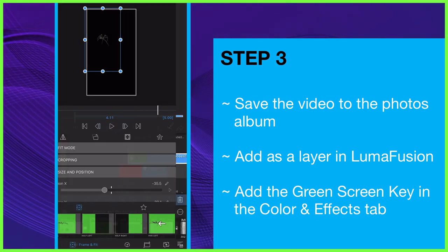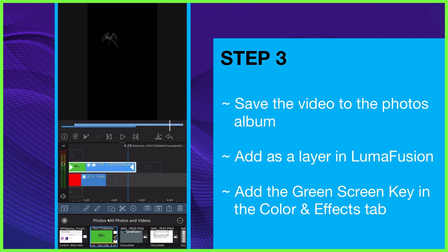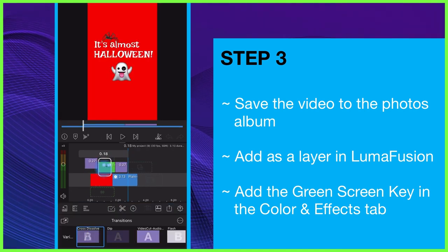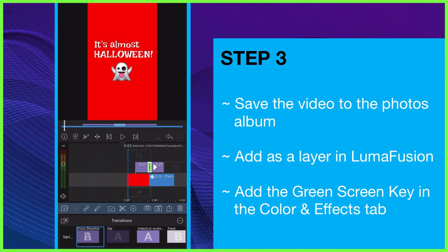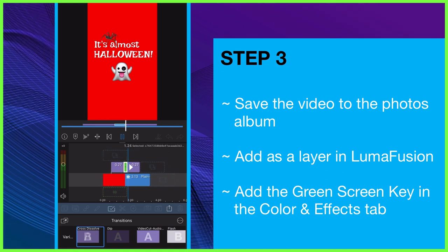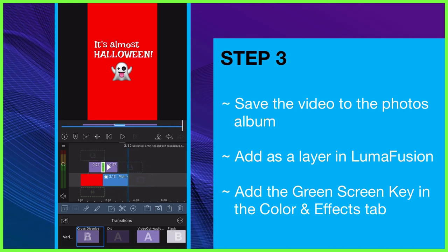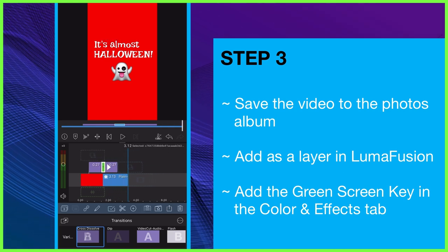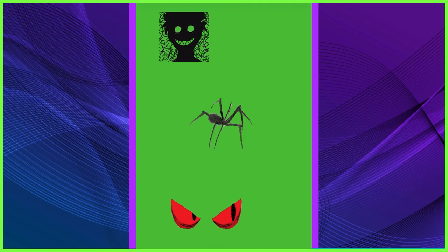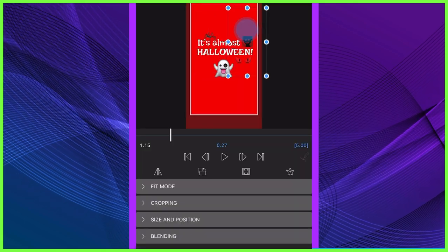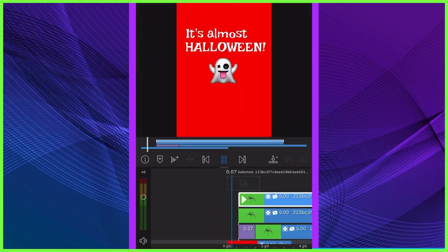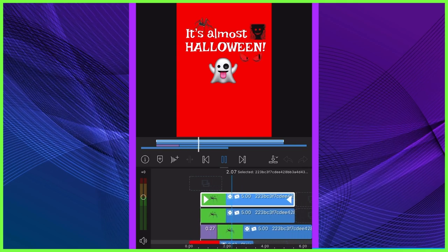Remember, you can also trim the length of this piece of content and add any transitions as you need. Of course, if you're going to add multiple GIFs to your video in LumaFusion, just make them all in one picture in Instagram and crop them as necessary in your editor. That way, you only have to go into Instagram once.